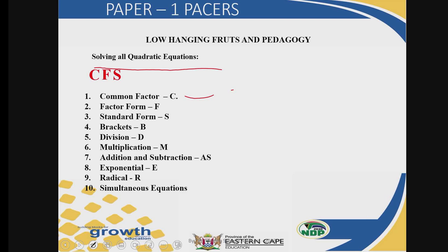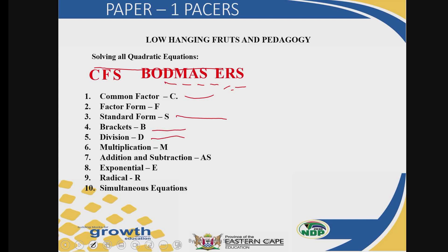S is the standard form — that is the third one. And B is the brackets. Then you have got D, which is division. You have got your multiplication, your addition, your subtraction, your exponential, your radical, as well as simultaneous equations. Those are the kinds of equations that will always be assessed in every paper one question paper in technical mathematics, and it contains 25 marks.